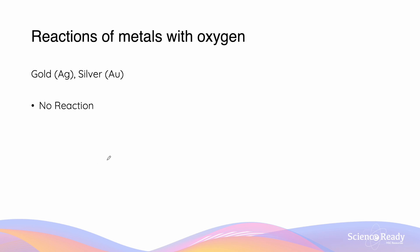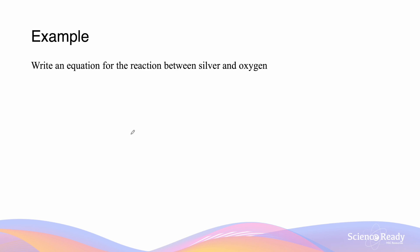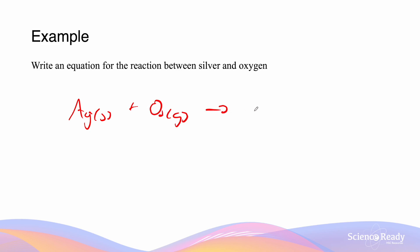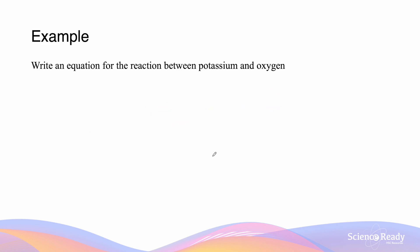Gold and silver are particularly inert metals which do not react at all with oxygen. Our first sample question asks us to write an equation for the reaction between silver and oxygen. Silver does not react with oxygen, so we write: Ag + O₂ → no reaction (N.R.). The reaction between potassium and oxygen will form an oxide layer.